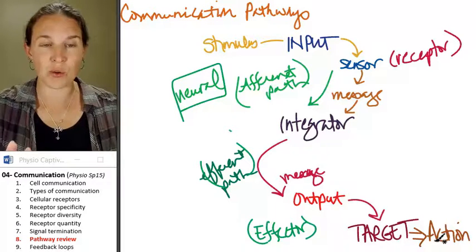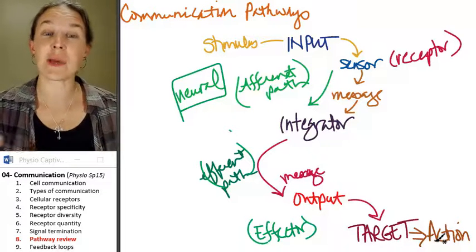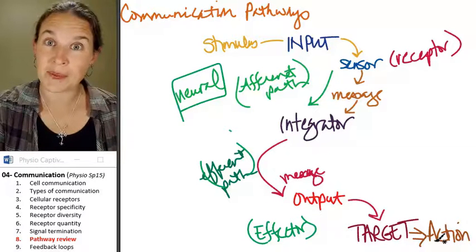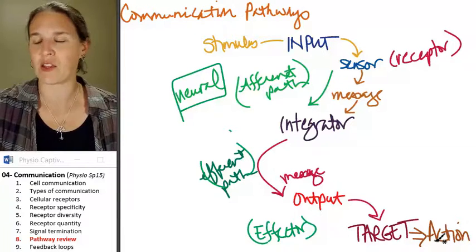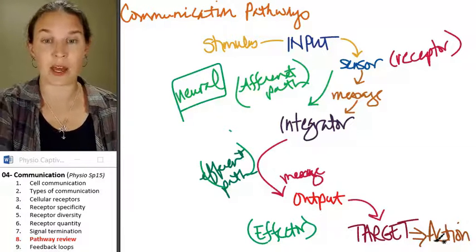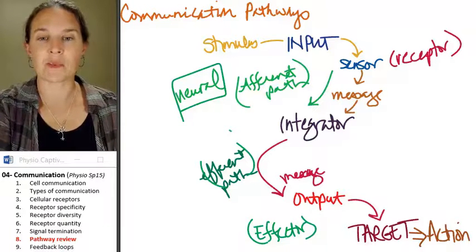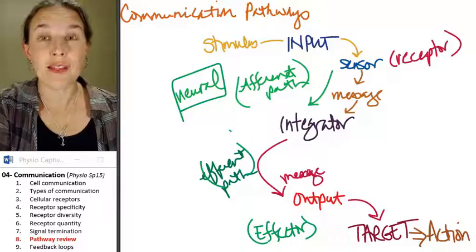Now we have to introduce the idea of feedback loops because now you have a pathway. We have to talk about the different kinds of feedback that you can have in such a pathway. That is assuming I can turn this off.